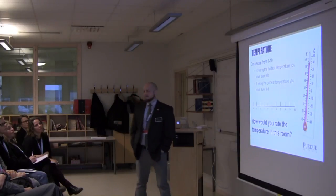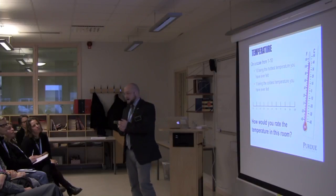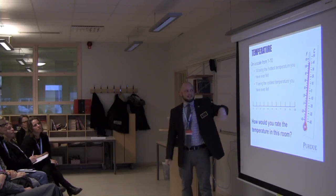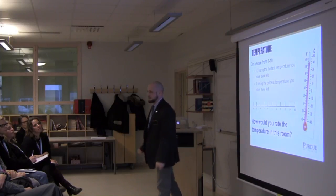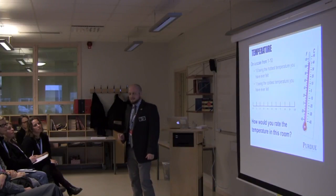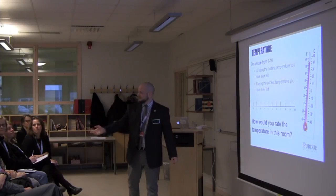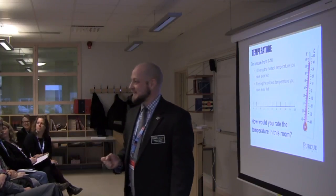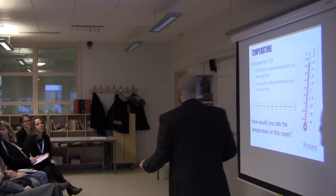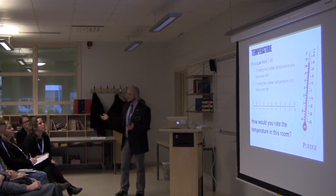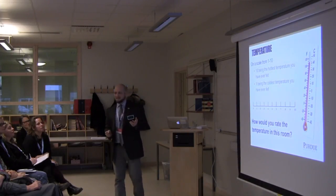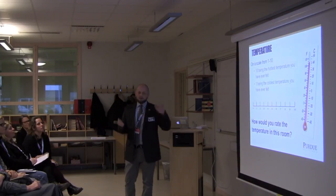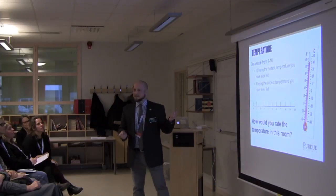So talking a little bit about assessment and adaptive comparative judgment, I'm going to give you just a little bit of a challenge. This room is a little different than the last room. On a scale from one to ten — ten being the hottest temperature you ever felt, and one being the coldest temperature you personally have ever felt — how would you rate the temperature in this room? So we have a range between four and seven. When we're evaluating the temperature of this room, it's all kind of based on our prior experience or prior knowledge.